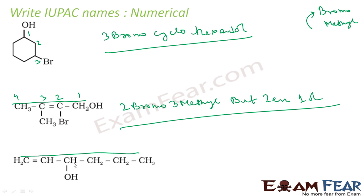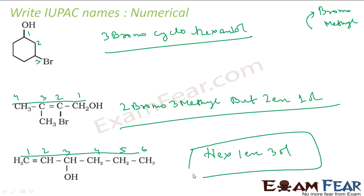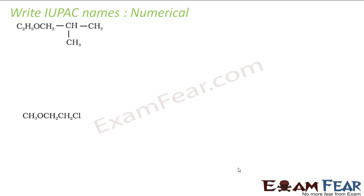Numbering one, two, three, four from right to left gives OH at position four; left to right gives OH at position three, which is better. The double bond also falls at a lower position this way. So with six carbons — hex — the double bond at one gives hex-1-ene, and OH at three gives hex-1-en-3-ol. The more you practice the better it will be.